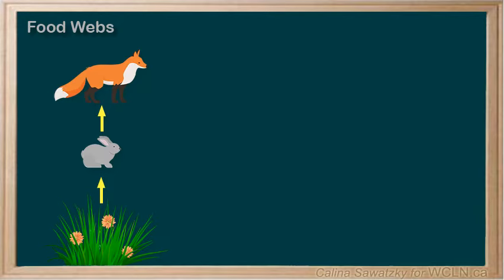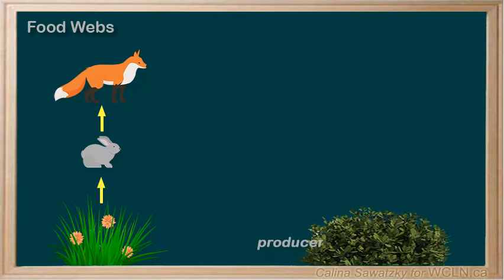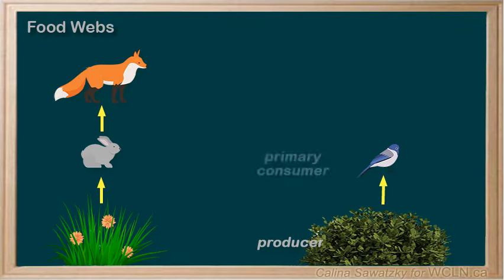Let's make another food chain. Let's start with our producer — a plant. In this case, a berry bush. Many small birds love berries. They need lots of energy to fly around and sing songs. In this case, the bird is the primary, or first, consumer.